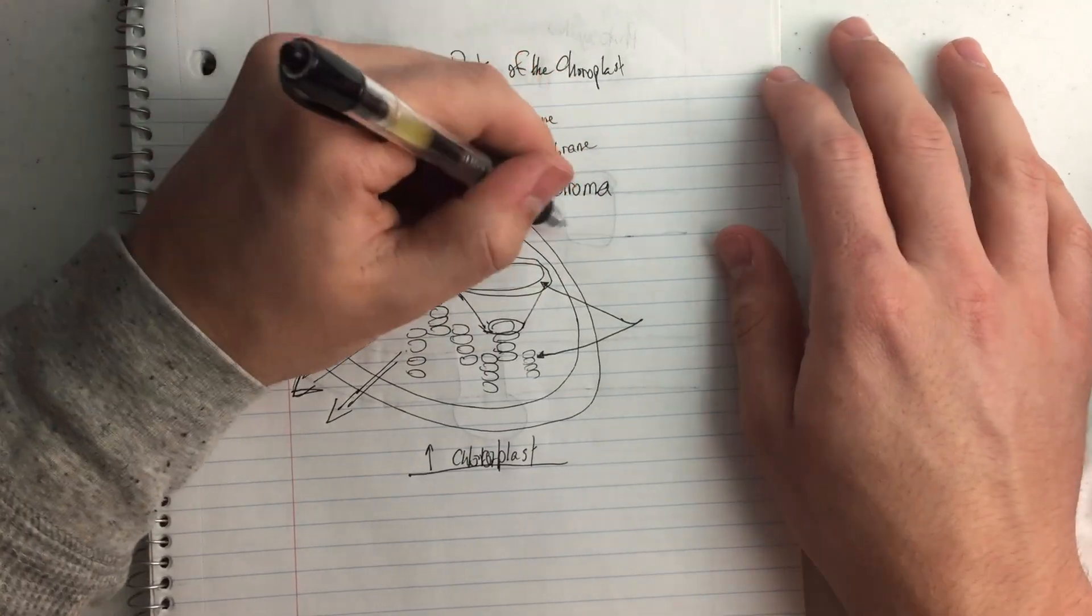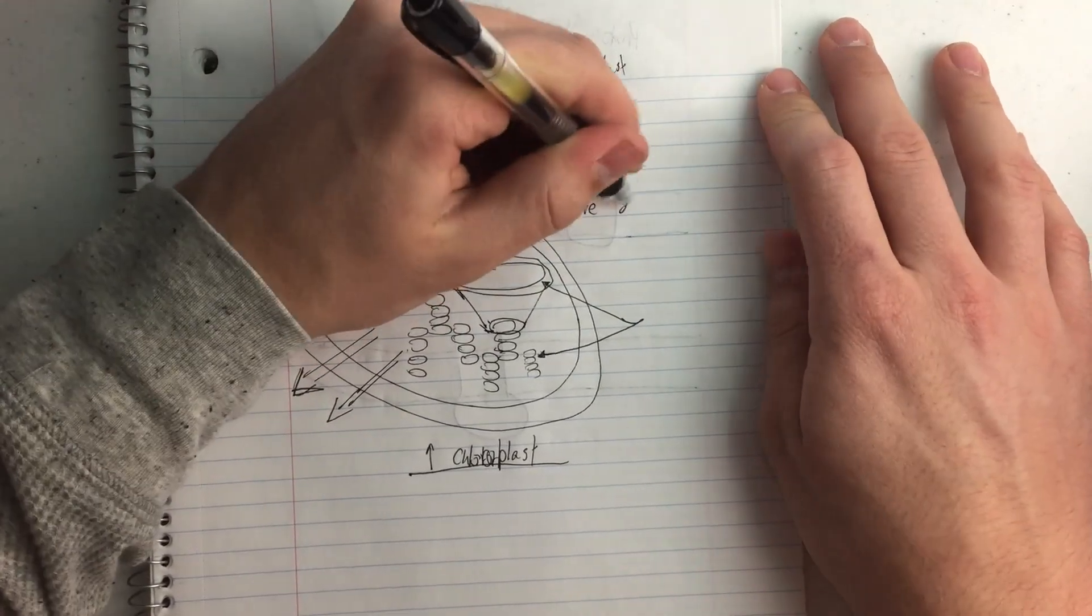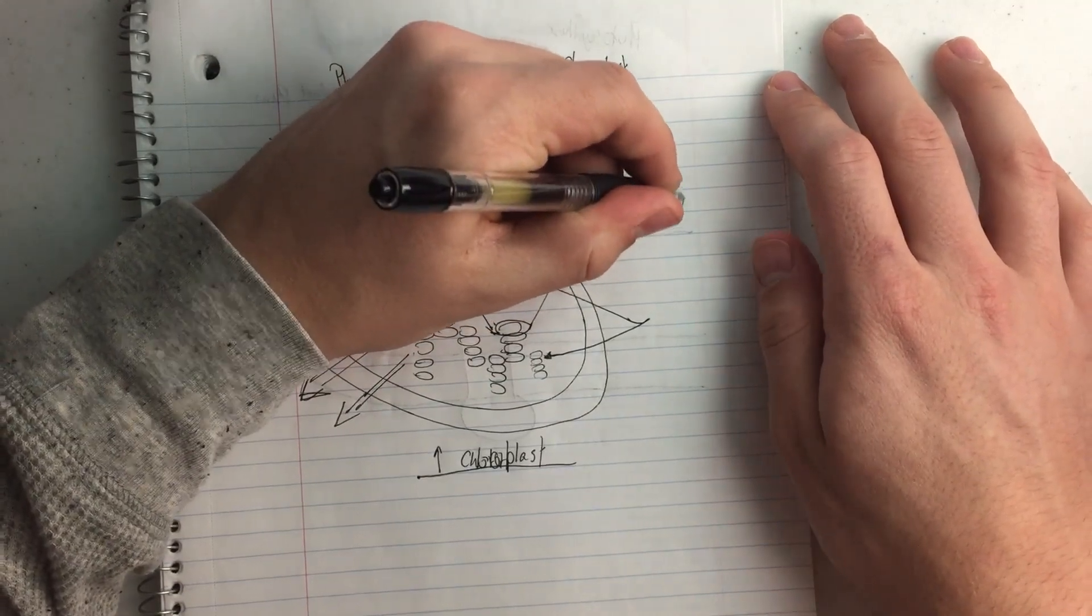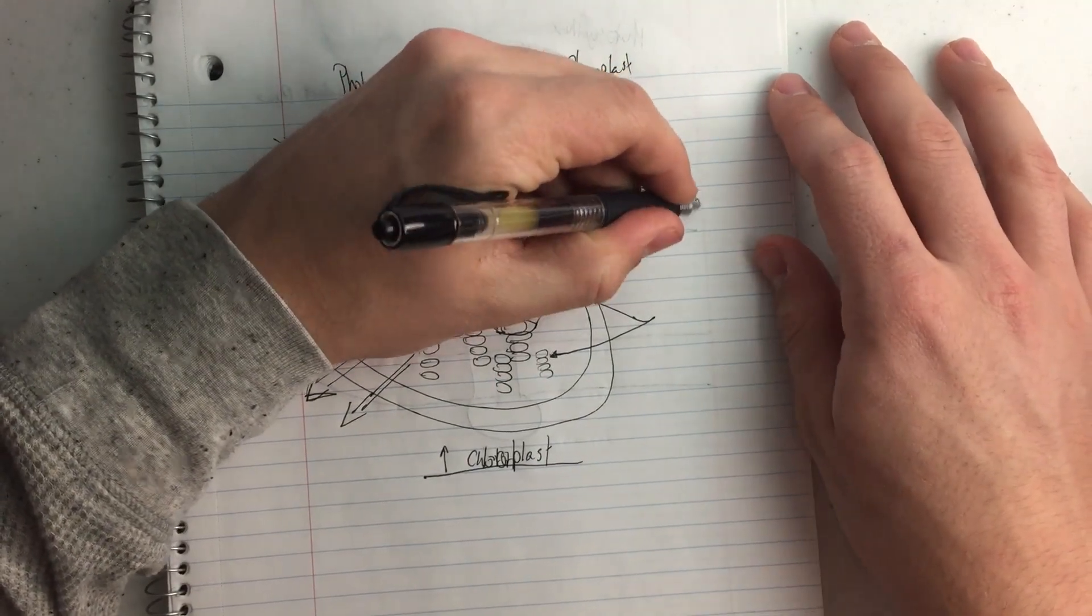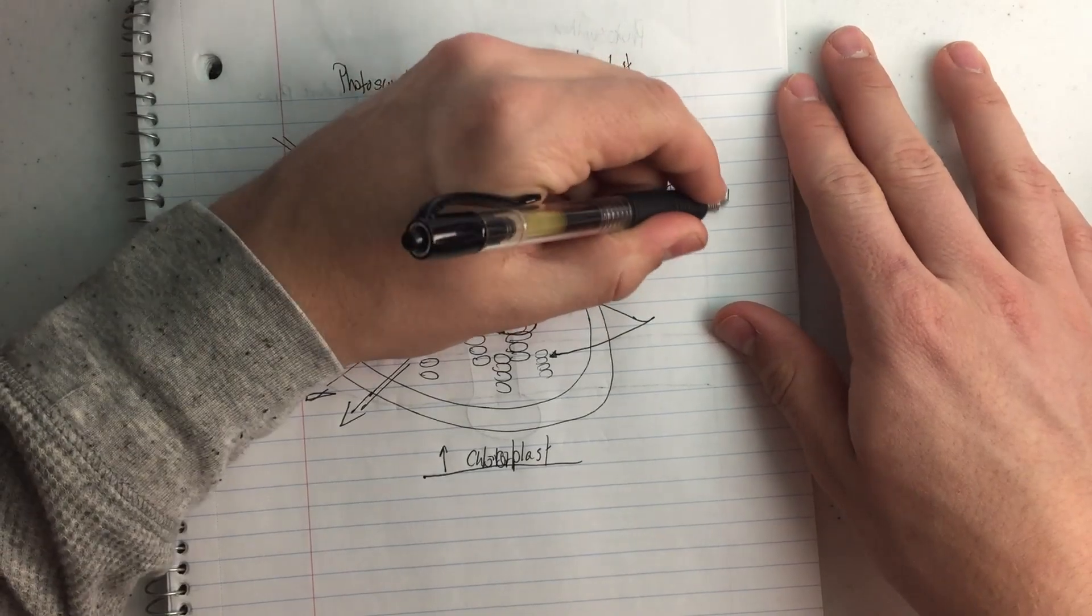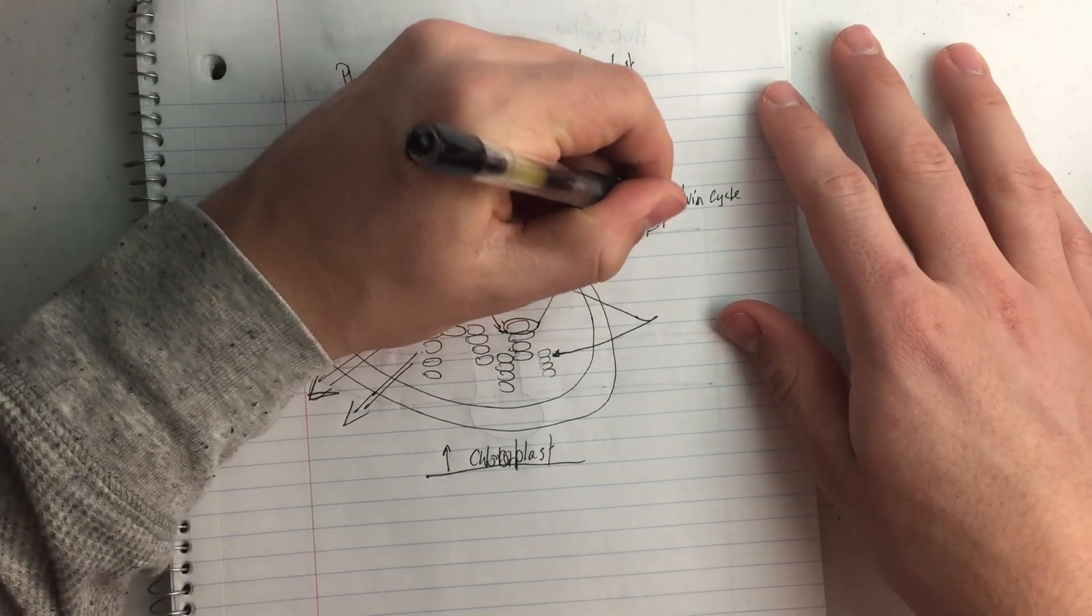And this is the site of the Calvin cycle, or also called the light independent reactions.